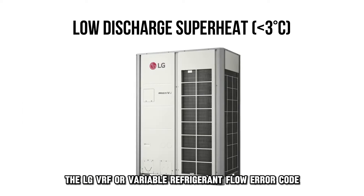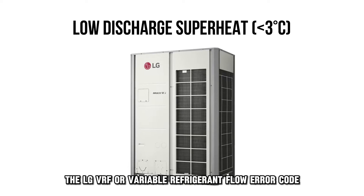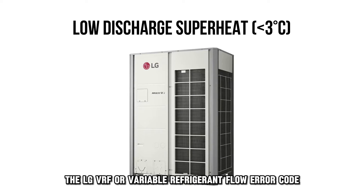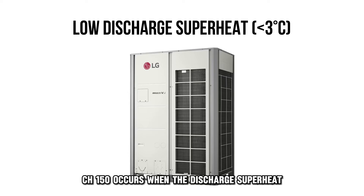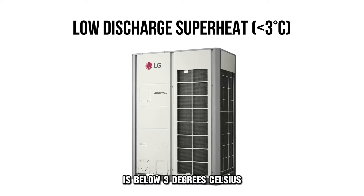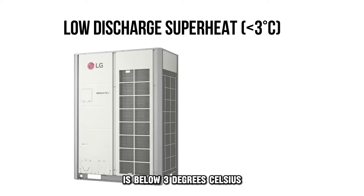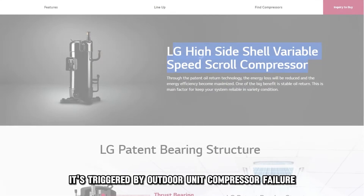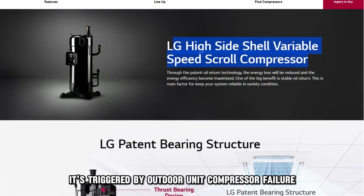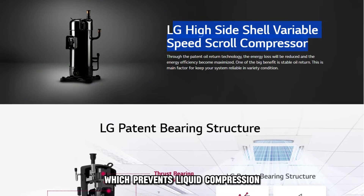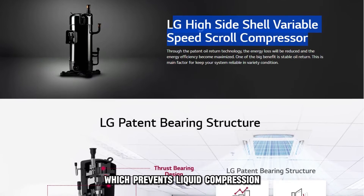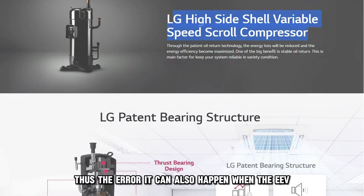The LG VRF or Variable Refrigerant Flow error code CH150 occurs when the discharge superheat is below 3 degrees Celsius. It's triggered by outdoor unit compressor failure, which prevents liquid compression, thus the error.